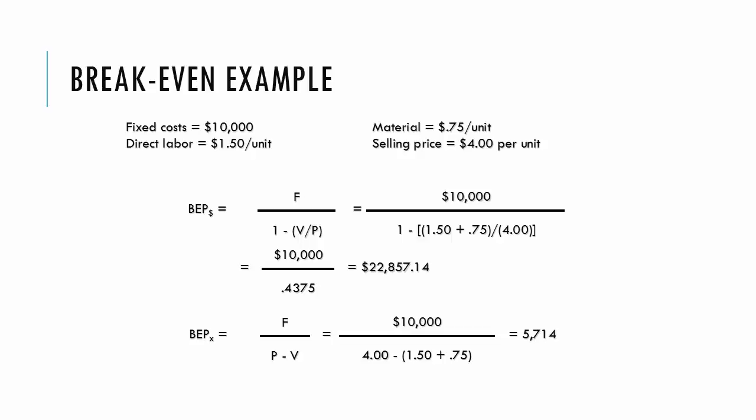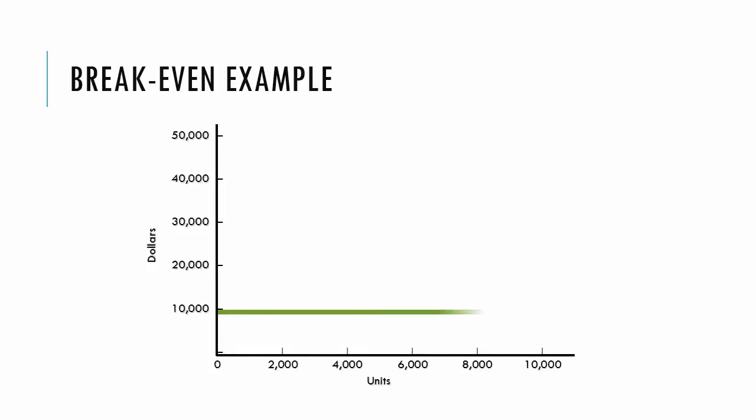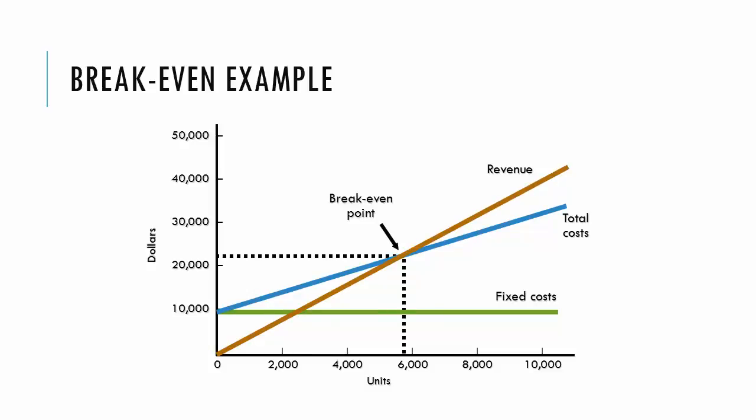Here we see the graphical representation of the break-even point in both dollars and units. So again the fixed cost at $10,000, total cost curve, total revenue, break-even point where they intersect.